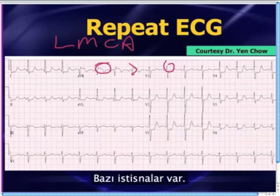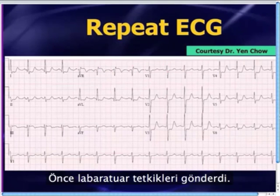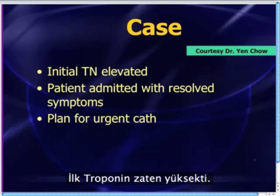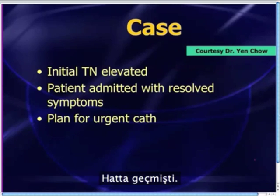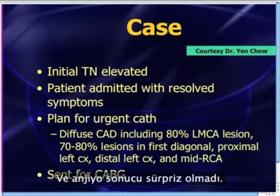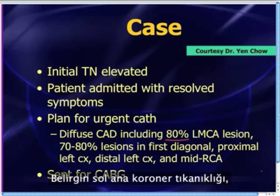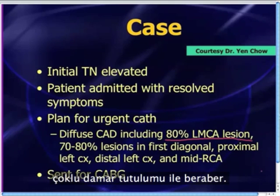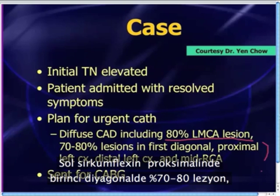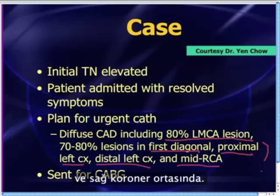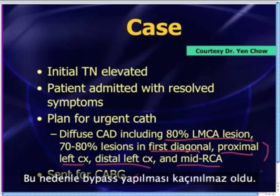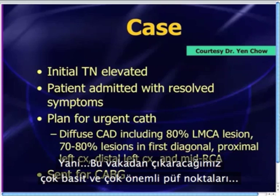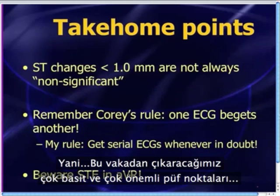That's what Dr. Chow was concerned about. He sent off some labs — the initial troponin was already elevated. He admitted the patient, whose symptoms were much improved, perhaps even resolved. He planned for urgent cardiac catheterization, and to no surprise, the cath showed significant left main coronary artery occlusion and multi-vessel involvement: 70% to 80% lesions in the first diagonal, the proximal left circumflex, the distal left circumflex, and the mid-RCA. With significant multi-vessel involvement, he ended up going for cardiac bypass surgery.